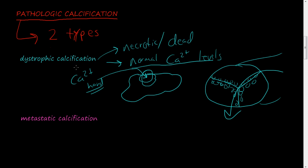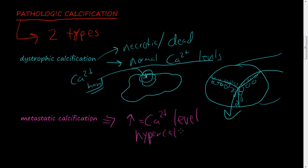The next type is metastatic calcification. Metastatic calcification usually occurs when you have an increase in calcium levels — what they call hypercalcemia, the medical term for having too much calcium in your blood. When you have too much calcium in your blood, you usually undergo metastatic calcification. We're going to talk about the differences between dystrophic calcification and metastatic calcification.